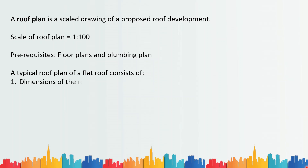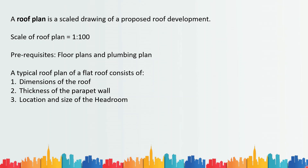A typical roof plan of a flat roof consists of several elements. Number one, it shows the dimensions of the roof. Number two, it shows the thickness of the parapet wall. Number three is the location and size of the headroom — the space at roof level above the staircase, whose minimum height has to be 2.2 meters based on the bylaws.